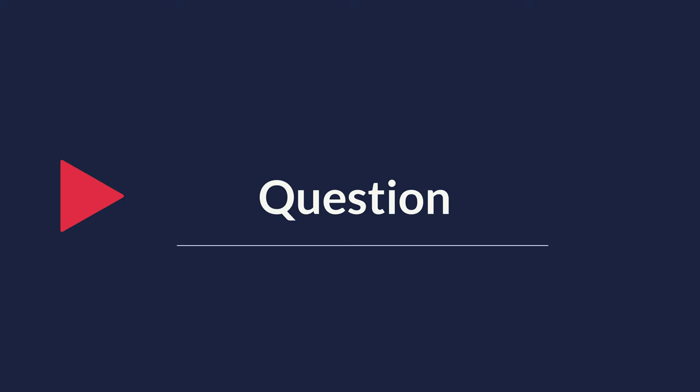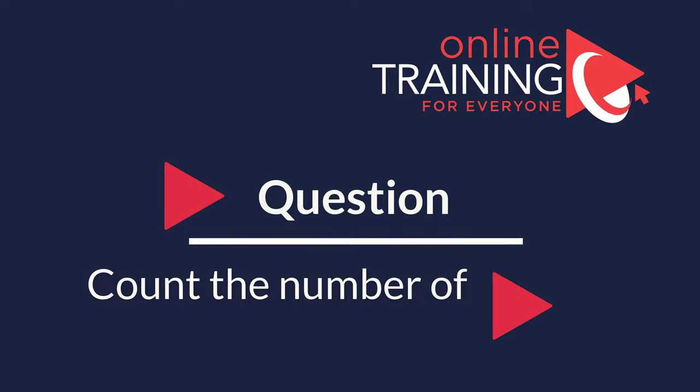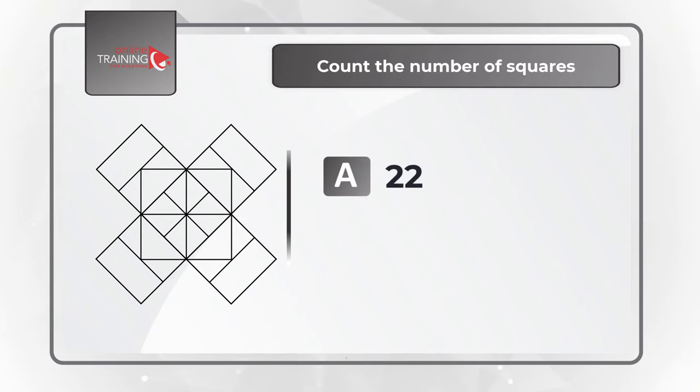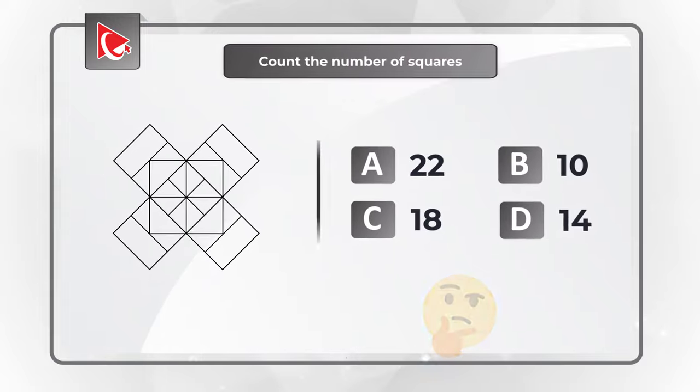Here is an interesting problem where you need to count the number of squares in the presented shape. The correct number is one of four different choices. Choice A, 22. Choice B, 10. Choice C, 18. And choice D, 14. Take a close look at the picture to see if you can come up with the right solution.